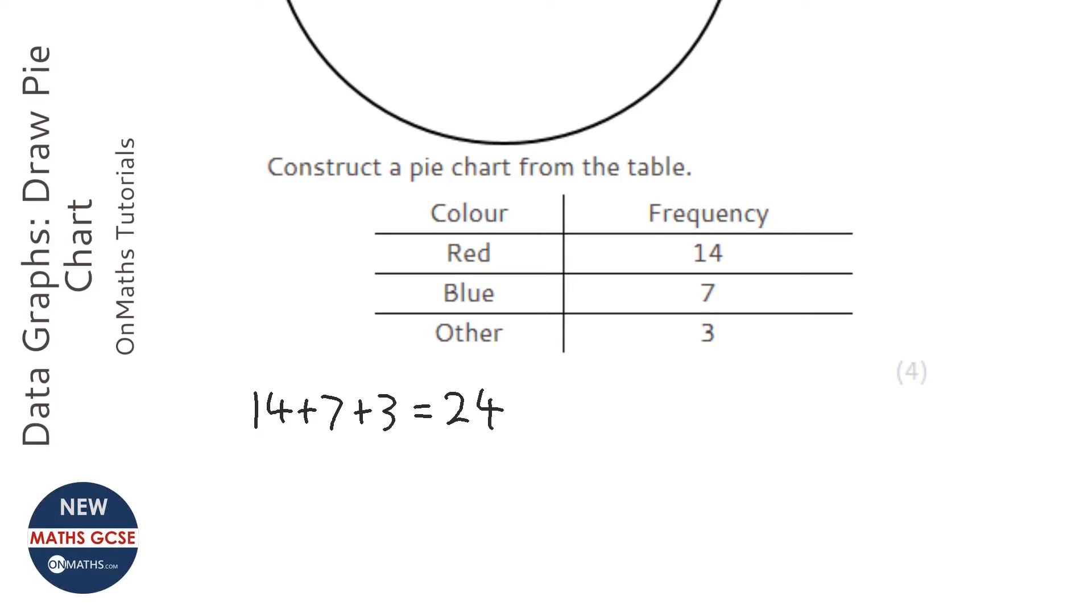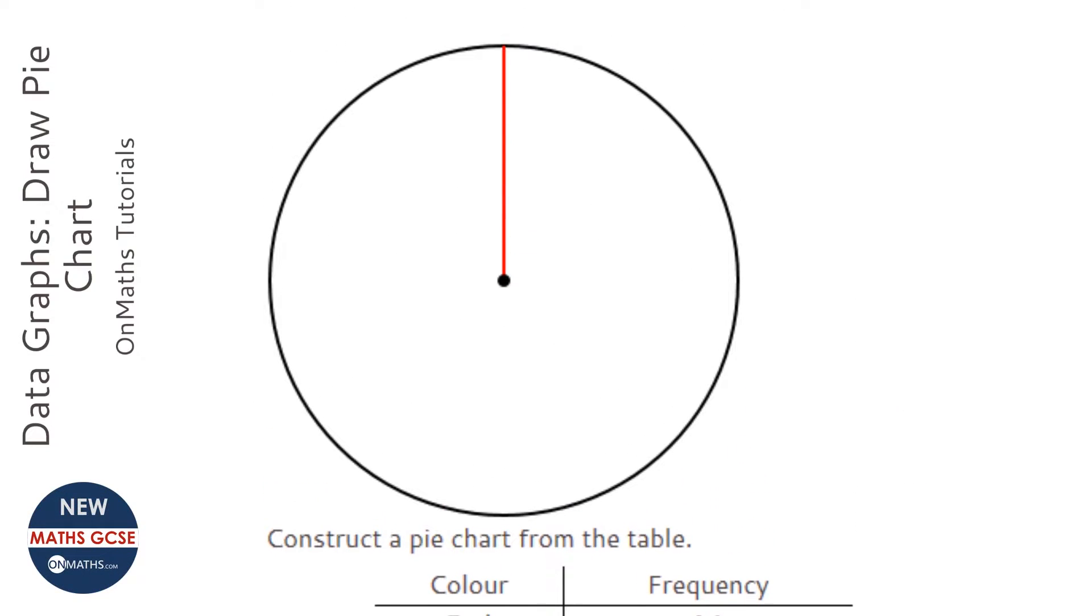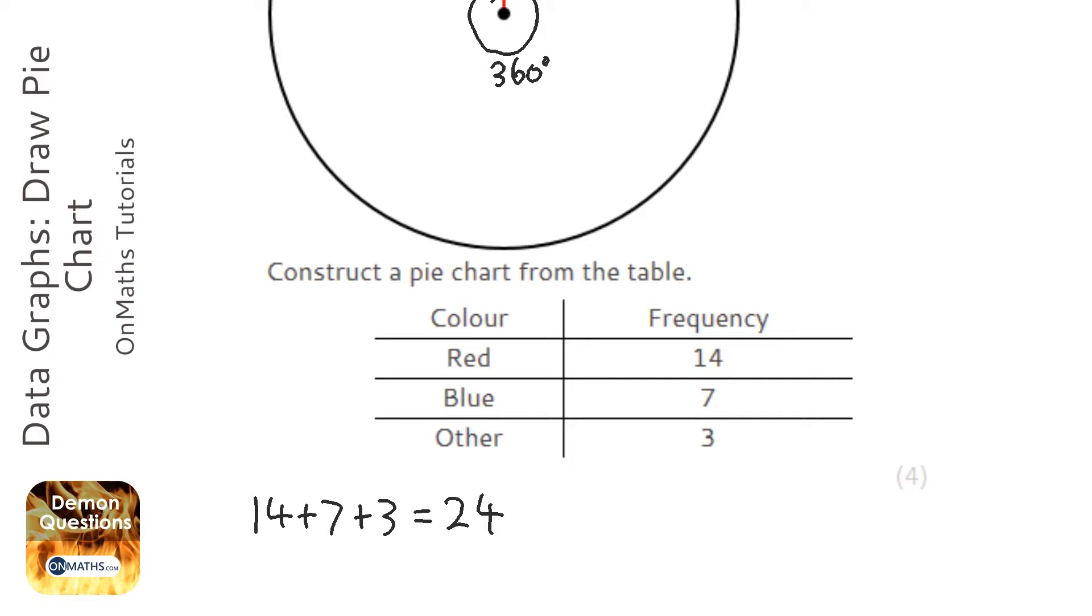OK, now the problem we have is a circle has to add up to 360. And at the moment all of our frequencies add up to 24. So we've got to find out what we're going to multiply all these frequencies by to get them to add up to 360.